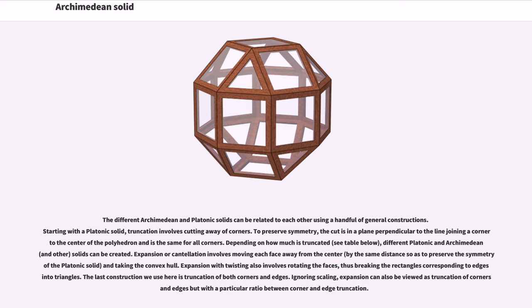Expansion or cantillation involves moving each face away from the center by the same distance so as to preserve the symmetry of the Platonic solid and taking the convex hull. Expansion with twisting also involves rotating the faces, thus breaking the rectangles corresponding to edges into triangles. The last construction we use here is truncation of both corners and edges. Ignoring scaling, expansion can also be viewed as truncation of corners and edges but with a particular ratio between corner and edge truncation.